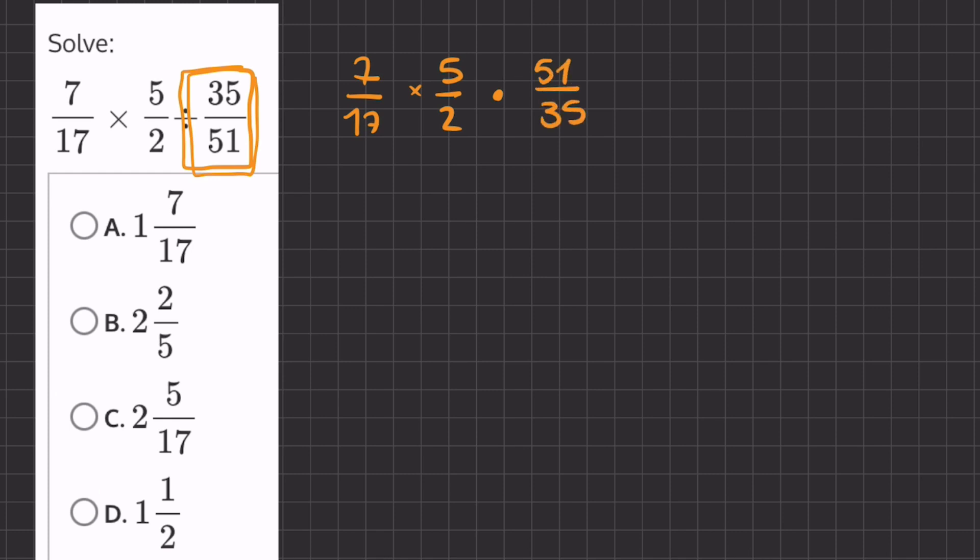Now, we can start multiplying these fractions together, but before we do so, we can use the commutative property of multiplication in order to manipulate these fractions and make it easier for us to solve.